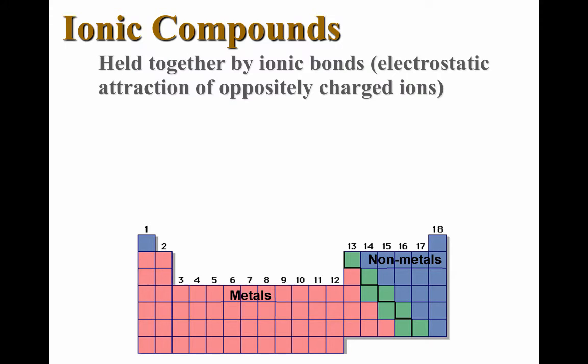The first thing we'll look at is what exactly an ionic compound is. Now get this. This is big. An ionic compound is a compound held together by ionic bonds. What exactly is an ionic bond? An ionic bond is an electrostatic attraction of oppositely charged ions.